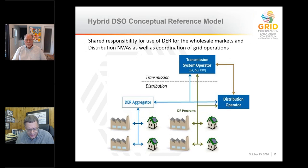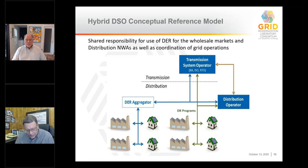The hybrid model — the one in between on our spectrum — is more complicated. You can see that there are lines flowing to both the transmission system operator and the distribution operator, and you've also got a stronger line, more coordination, between the TSO and the DSO here. Just by the nature of the way this is structured, there's more complication going on. And in practice, where we've looked at this around the world, these hybrid models get a lot more complicated than even what we're showing here.